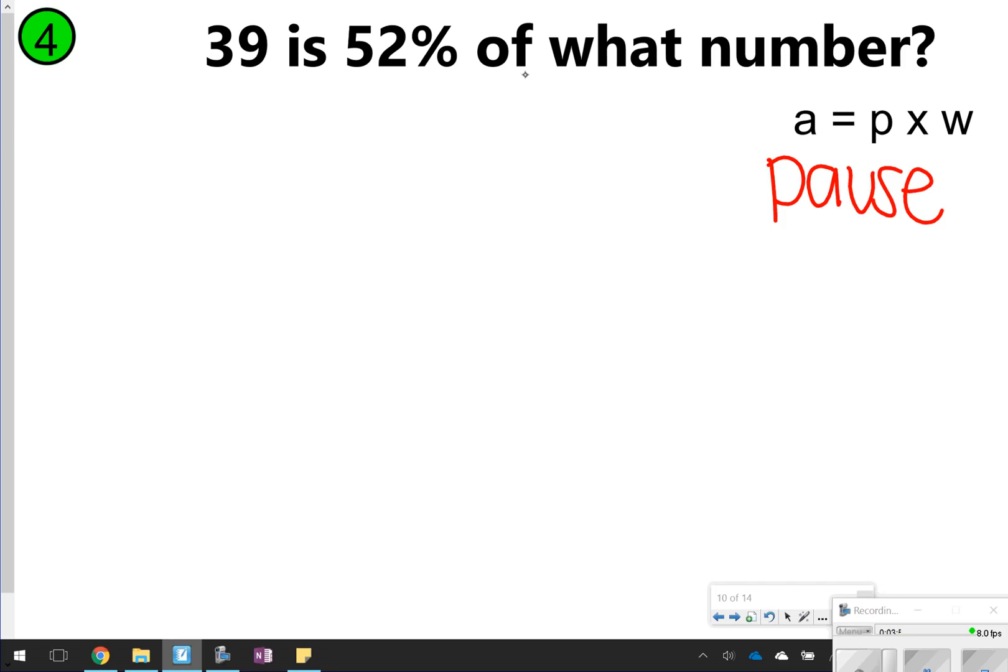So this one, it looks like we're solving for of. We have is, which is 39. We have 52%, but we don't have of, so I'm going to just write an x. Remember, the percent needs to be changed into a decimal, and then we can solve.